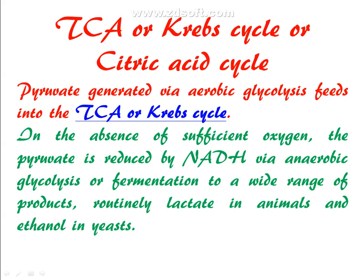Today we are starting with the Krebs cycle. Krebs cycle is also called as a TCA cycle. TCA means it is tricarboxylic acid cycle, or it is also called as a citric acid cycle. So you have three names for one cycle: TCA, Krebs, or citric acid cycle.